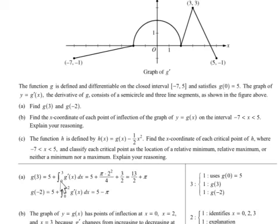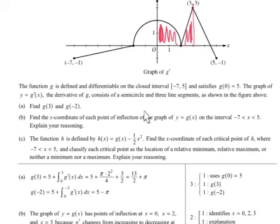To find the change — to integrate this, they're finding this semicircle area and this region. That's what they're doing. 5 is the initial amount, this right here is this red area, and this 3/2 is this little triangle. That's your result. You don't have a calculator, so that's good enough.